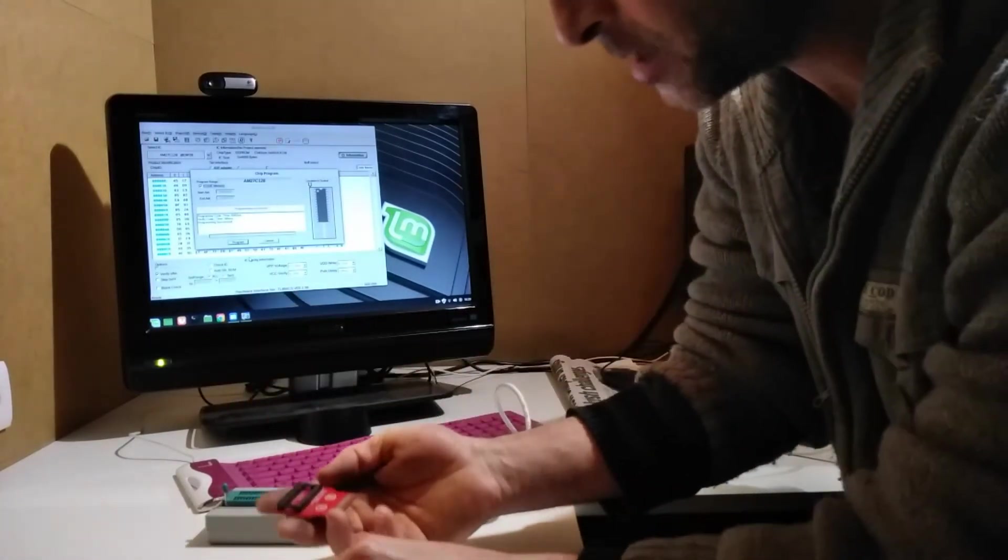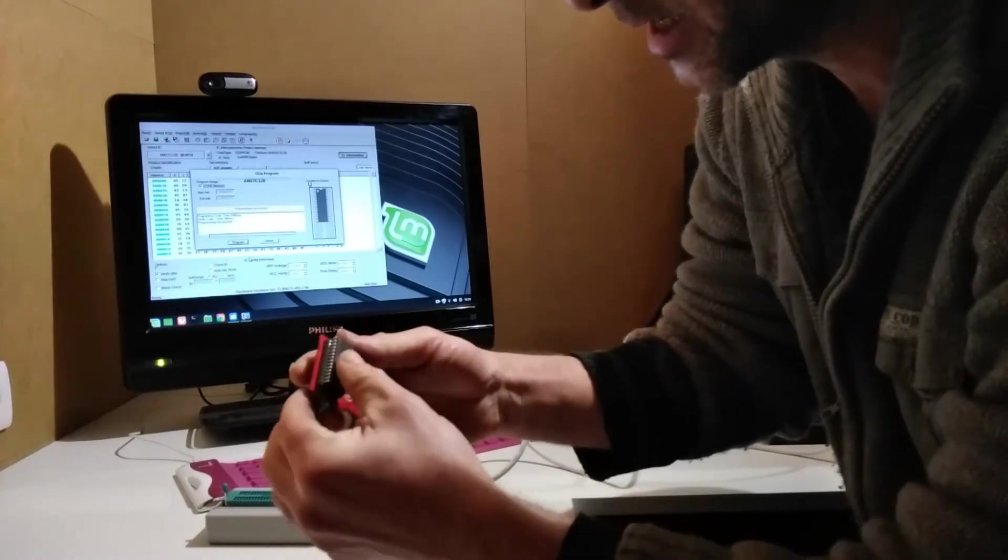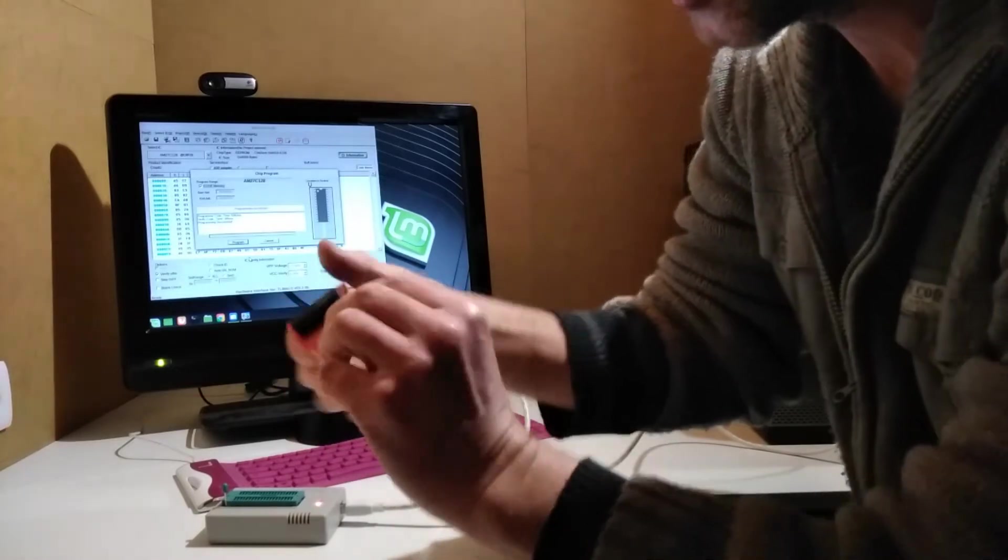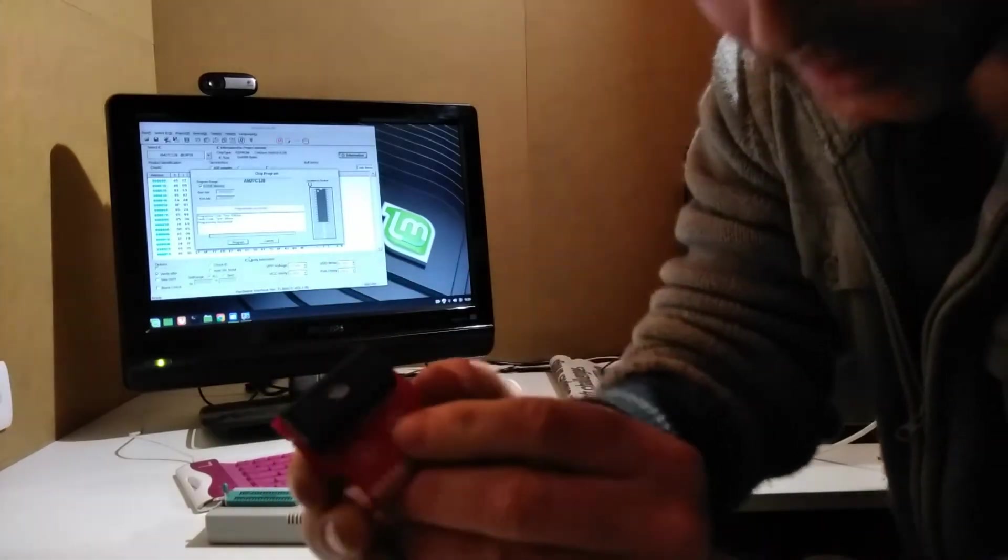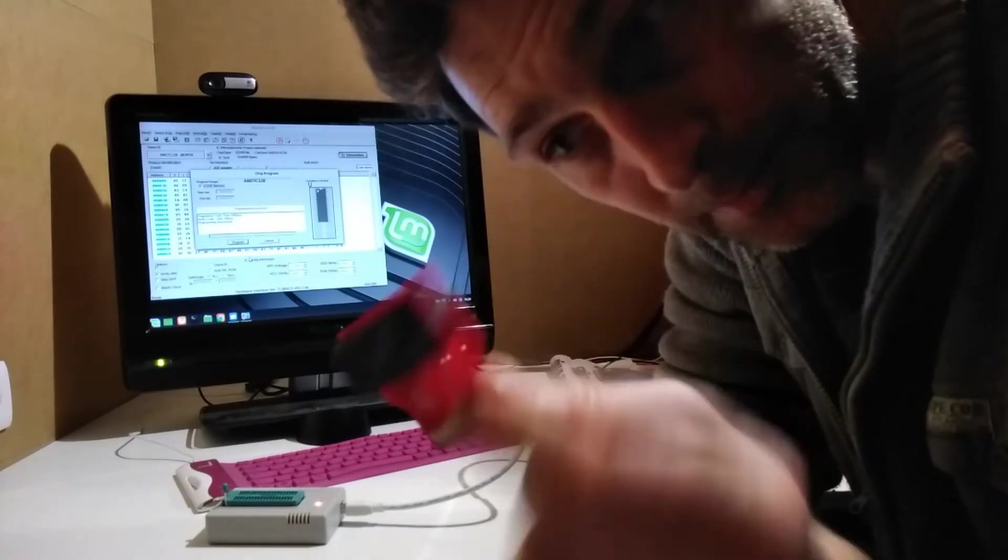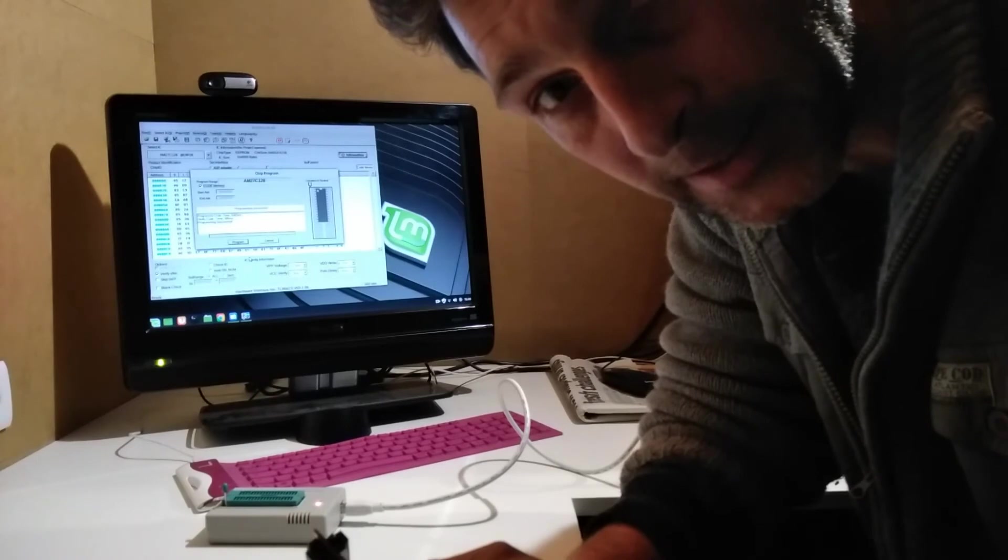So I can remove this chip, pop it in making sure again that pin one is in the correct location, and that's all there is to it. That little cartridge PCB should now work for me in my Atari 2600, so we'll go try it out and see what happens.